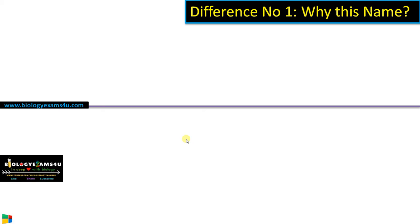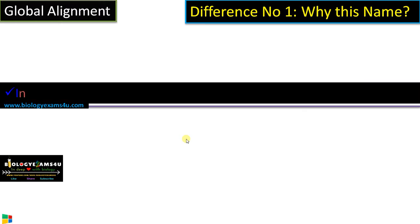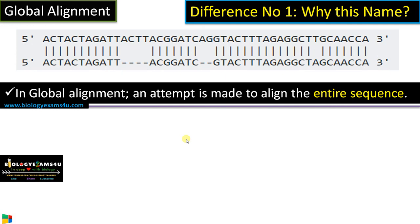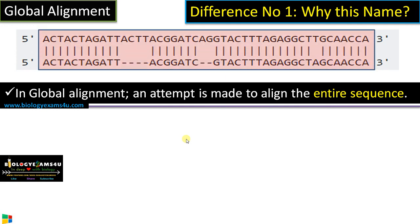Moving into global and local alignment. In the case of global alignment, the entire sequence is aligned from the beginning to the end — it can also be called end-to-end alignment. A sequence is placed one above the other, aligning completely or globally, in totality.